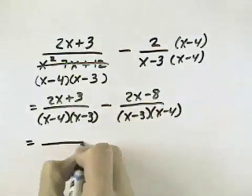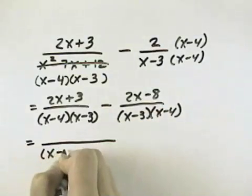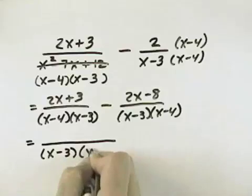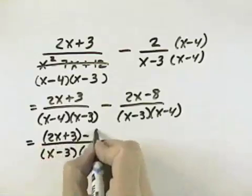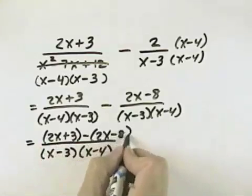So that we're ready to combine these over the common denominator of x minus 3 times x minus 4. And our first numerator is 2x plus 3, and our second one is minus the quantity 2x minus 8.